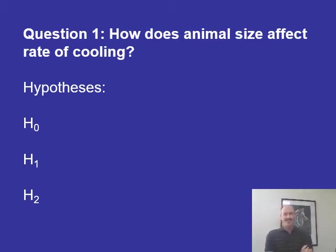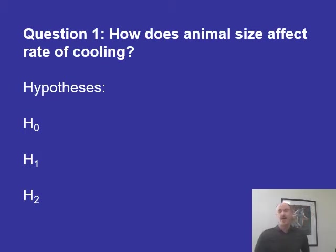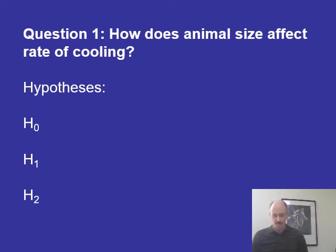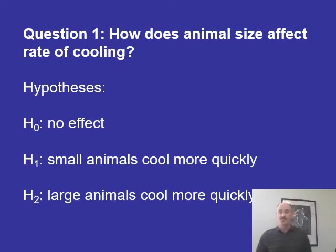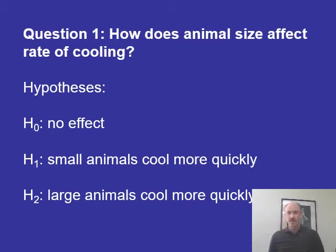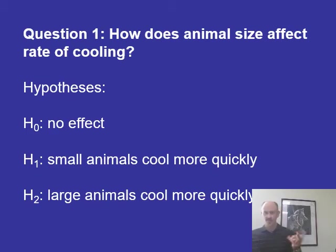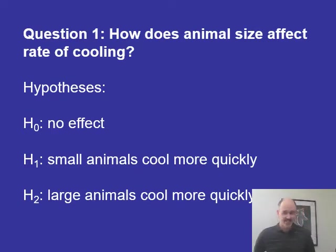Before you run that experiment with the two different-size bulbs, you need a hypothesis. We're formulating statistical hypotheses: the null hypothesis states there is no statistical difference in the rate of cooling between the large and small simulated organism. H1 is that small organisms cool more quickly; H2 is that large organisms cool more quickly. You can then run a t-test to see which hypothesis is most supported by the data.